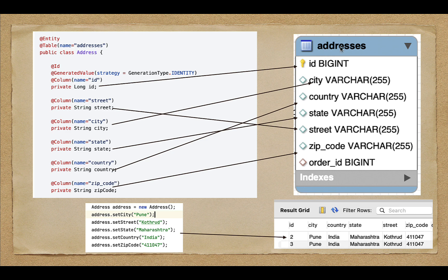In Java, we create objects of a class using the new keyword. For example, here we have created an object of the Address class and filled in values. Whenever we persist this object into a database table, ORM will map the fields from this object into the columns of the database table — that object will be saved as a row. So we are not going to use a SQL statement; with ORM we can directly store an object into a relational database table as a row, and we can also retrieve an entire row as an object.